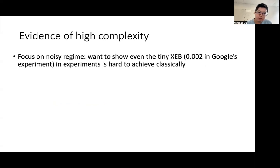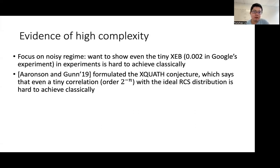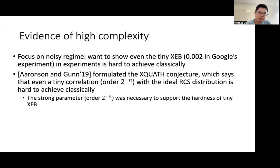Here we focus on the first aspect, which is the evidence of high complexity, and we will only focus on the noisy regime, where we want to show that even a tiny XEB such as the 0.002 in Google's experiment is already hard to achieve classically. In 2019, Aaronson and Gunn formulated a conjecture called XQUATH, which says that even a tiny correlation on the order of 1 over 2^n with the ideal RCS distribution is hard to achieve classically. This can be viewed as evidence to support the high complexity in Google's experiments. The reason they needed to formulate this strong conjecture with a tiny parameter of order 2^{-n} was because this strong parameter was necessary to support the hardness of achieving a tiny XEB.